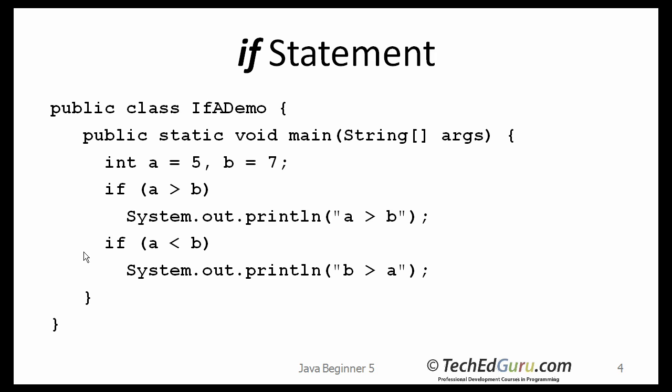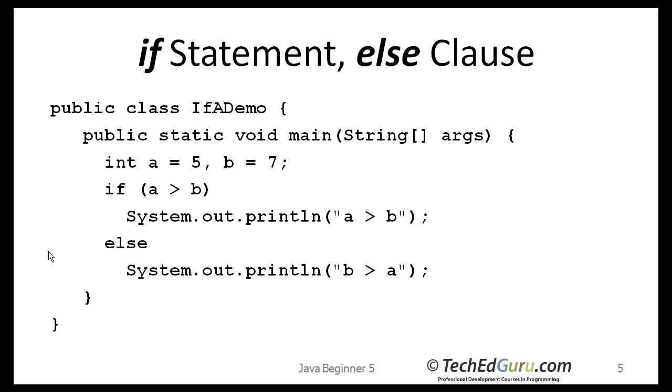However, for the question that we are asking, only one can be true. So we can actually write it by using the else clause. The question we are asking is: is a greater than b? And if that's not true, everything else goes under else. What would cause it to go under the else clause? If a was less than b, or a was exactly the same as b — that is going to be captured by the else clause.